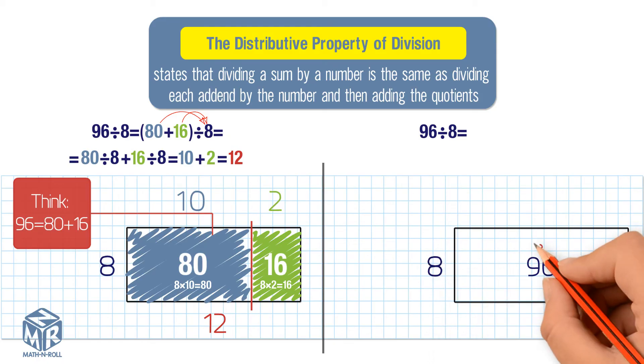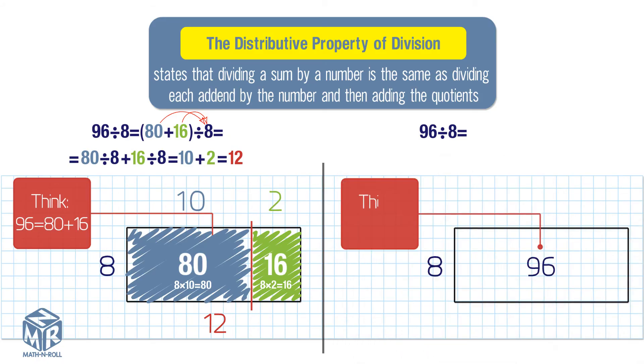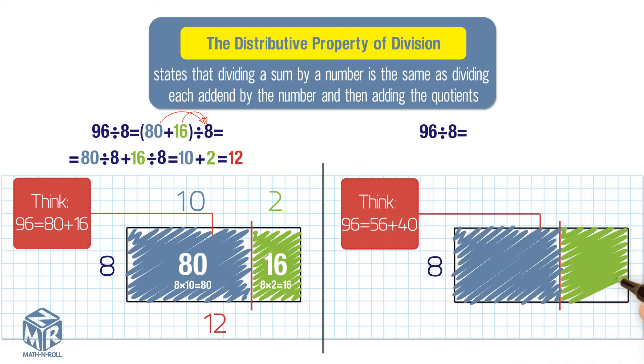For example, we can also break up 96 into 40 and 56. Both 40 and 56 are easy to divide by 8. Break up the model into two rectangles to show the sum of 56 and 40 divided by 6.